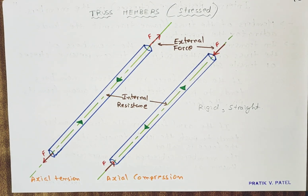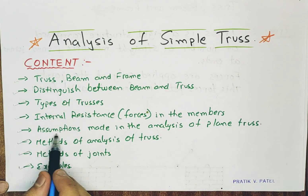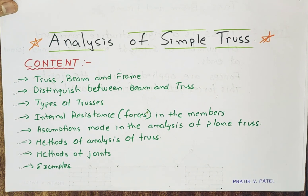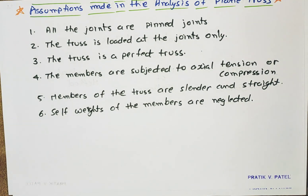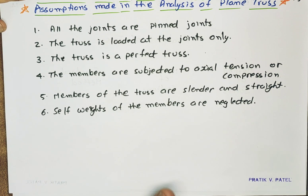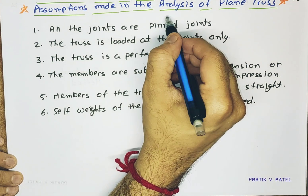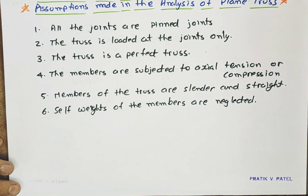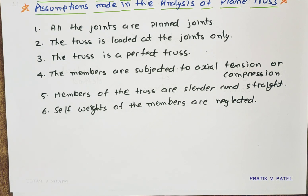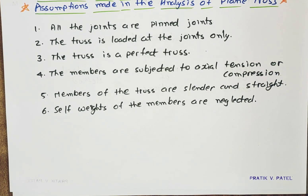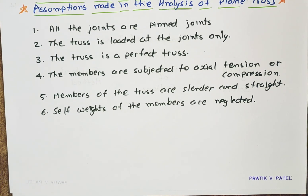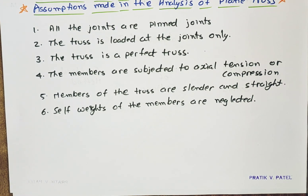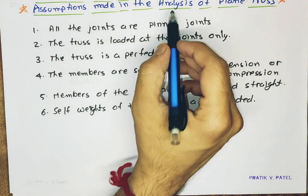Our next topic will be the assumptions made in the analysis of a plane truss. These are assumptions which we need to remember while analyzing a plane truss — that is, finding out the stresses. When we talk about analysis of a plane truss, that simply means finding the stresses of the truss members: whether they are tensile or compressive, the magnitude of each member stress, and whether the truss is perfect, imperfect, redundant, or deficient.